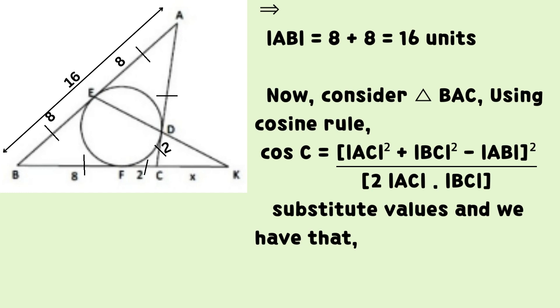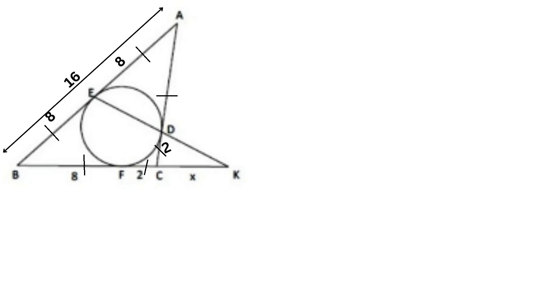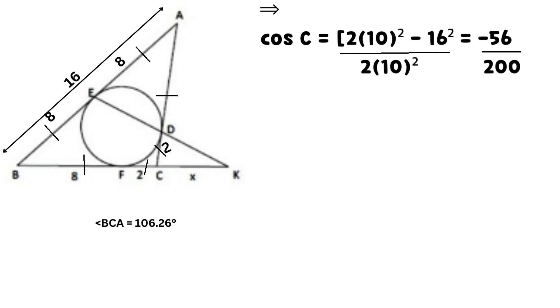Substitute values and we have that cosine C equals negative 56 divided by 200 after substitution and simplification of values.